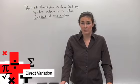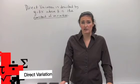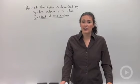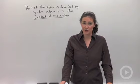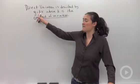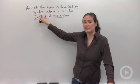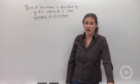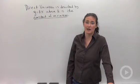There's a special kind of relationship in math that's called direct variation. We say that two variables vary directly if they fit this equation, y equals kx, where we call k the constant of variation.